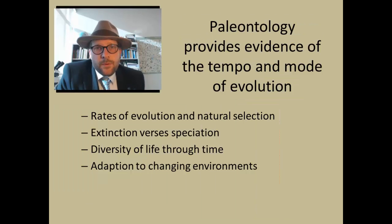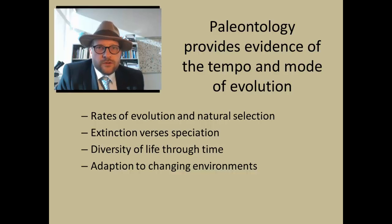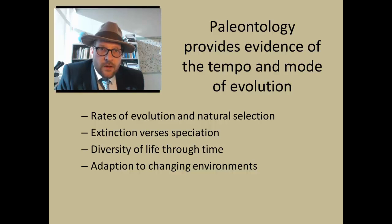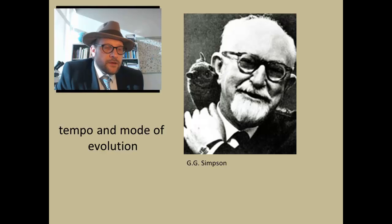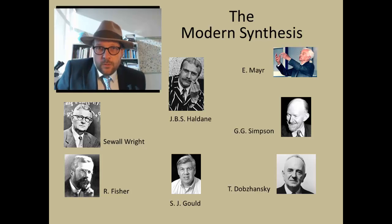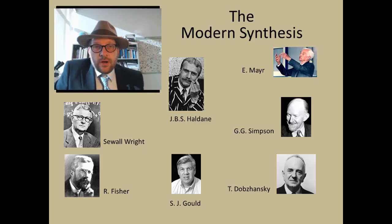Paleontology also provides evidence for the tempo and mode of evolution — how fast or slow organisms change, and the style of those changes. These key questions were addressed vigorously in the 1970s and 1980s. The terms tempo and mode come from the classic book by paleontologist G.G. Simpson, entitled Tempo and Mode in Evolution, published in 1944. Simpson was part of a group of evolutionary scientists who studied evolution from a multidisciplinary approach, including paleontologists, geneticists, biologists, and embryologists. Sadly, paleontology is not often included today in many discussions of evolutionary science, as molecular biologists have monopolized the study of evolution using a molecular approach.